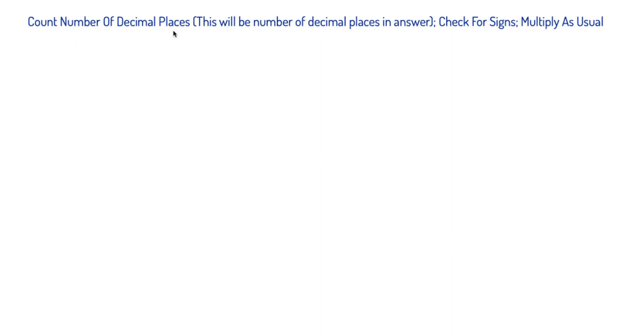Hey, we've got three rules here. Count number of decimal places. This will be the number of decimal places in your answer. Check for signs and then multiply as usual.